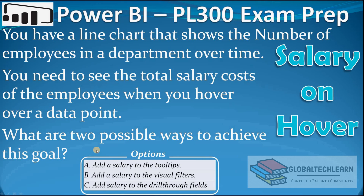The question is: you have a line chart that shows the number of employees in a department over time. You need to see the total salary cost of the employees when you hover over a data point. What are two possible ways to achieve this goal? We have to find two possible ways to achieve the total salary cost on hover.